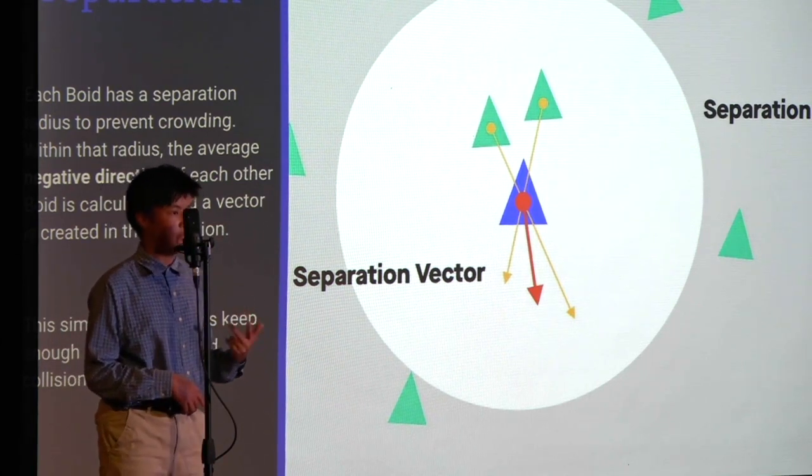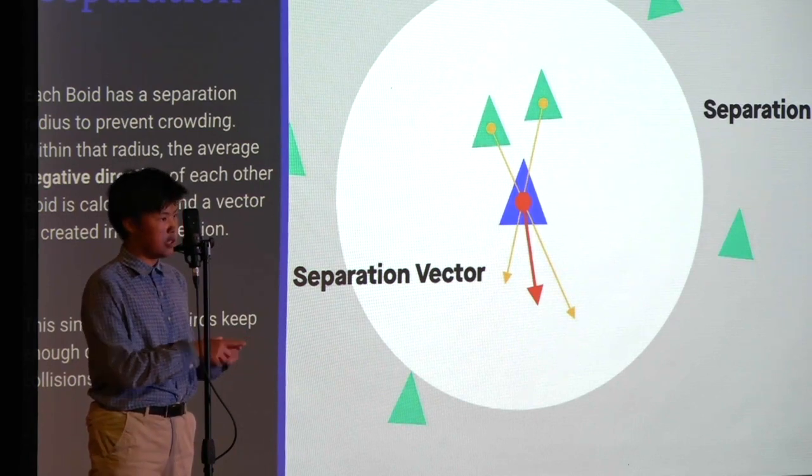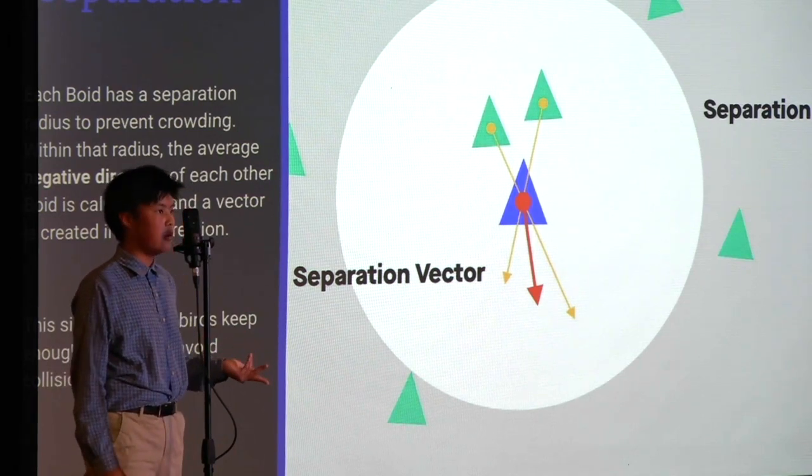This just makes sure that each boid doesn't merge, because with the last two rules, if you just run those, every single boid in the simulation will just merge into one, which is not how swarms work in real life.